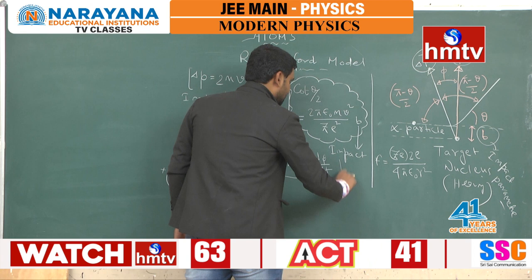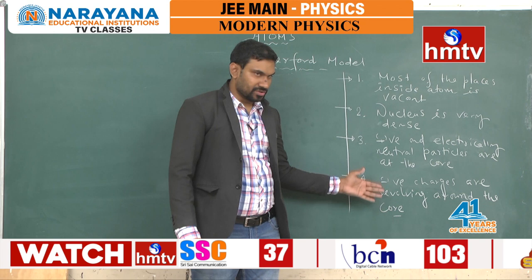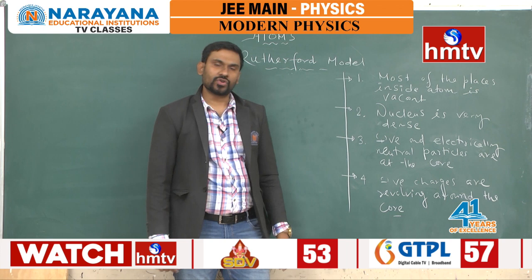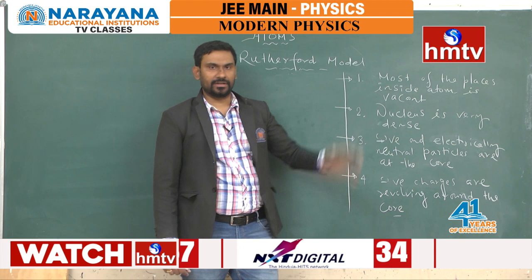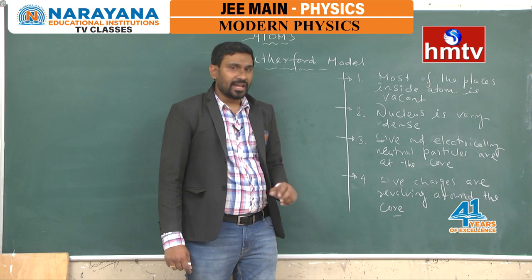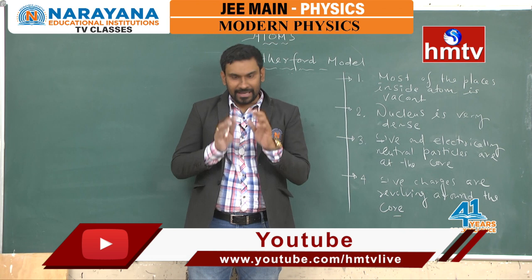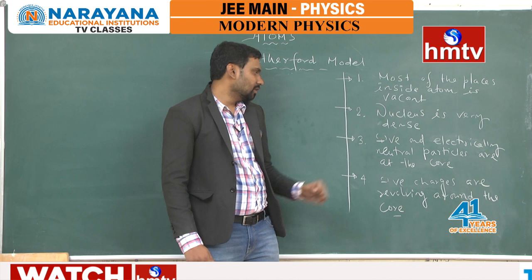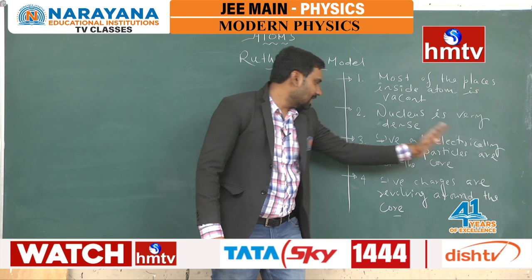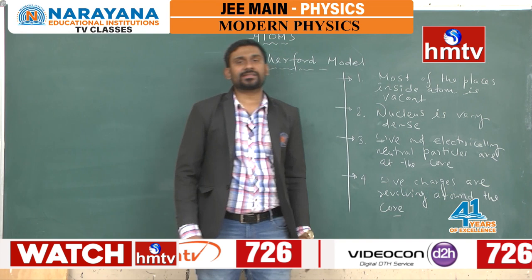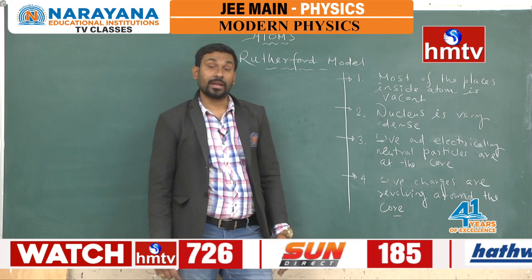After the Rutherford experiment, he arrived at these conclusions: first, most of the space inside an atom is vacant — most alpha particles went undeviated, and only one in 10,000 came directly back. Second, the nucleus is very dense — most of the atom's mass is concentrated in a small core called the nucleus. Third, positive and electrically neutral particles are present at the core. Fourth, negatively charged particles revolve around that core, the nucleus. There are some limitations with this model too.